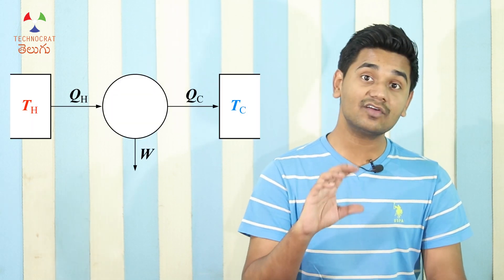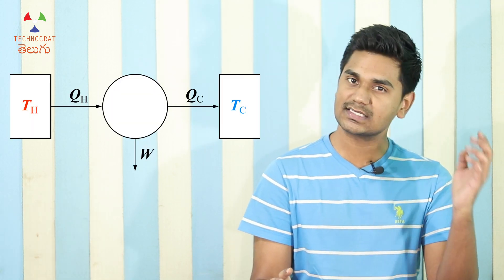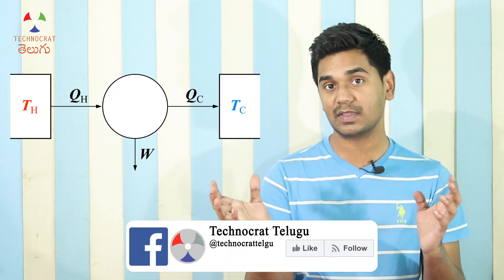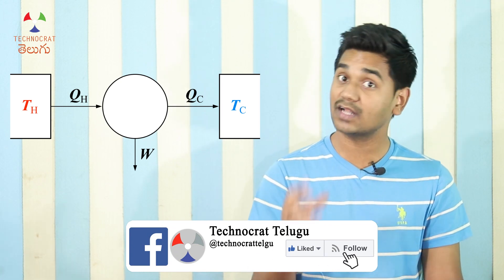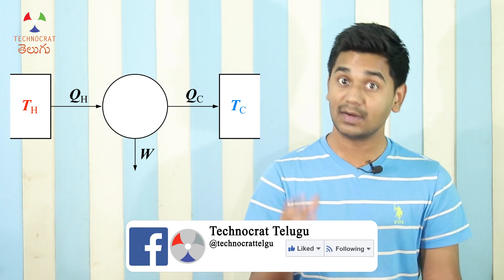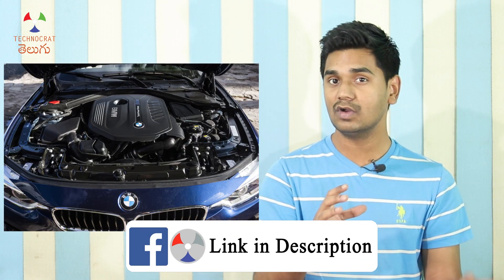Now when we increase the frequency, the processor also has a voltage increase. As we increase the frequency, we have more heat output and more power to consume.